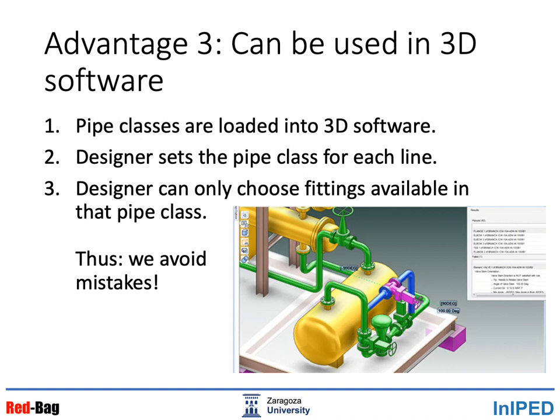A third advantage of using pipe classes is that they can be used in 3D software. First, pipe classes are loaded into the 3D software. Then, the designer sets the pipe class for each line he or she draws. The designer can then only choose fittings available in that pipe class. Therefore, we are avoiding mistakes — the designer cannot choose the wrong type of connection, the wrong type of material, and so on.